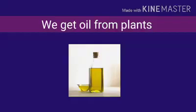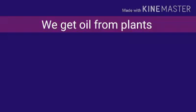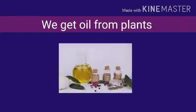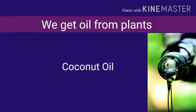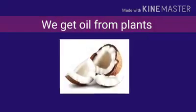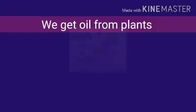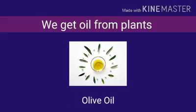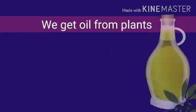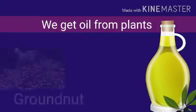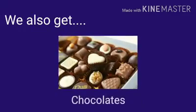We get oil from plants. We use oil for different purposes. We get oil by crushing the seeds of plants that are rich in oil. For example, we get mustard oil from mustard, coconut oil from coconut, and olive oil from olive. We also get oil from sunflower and groundnut.